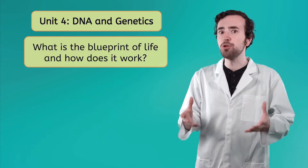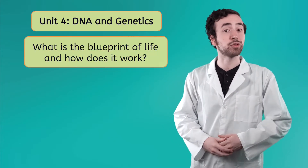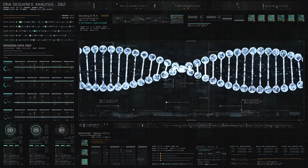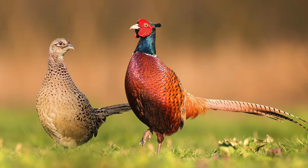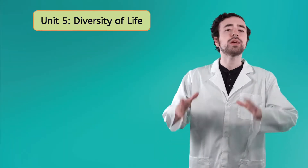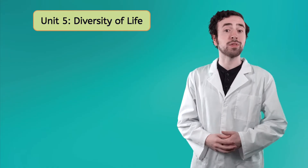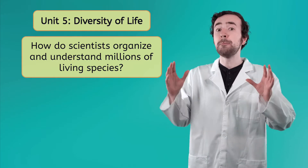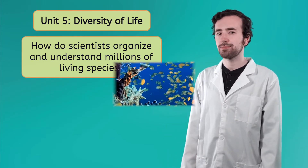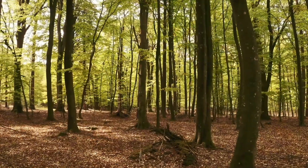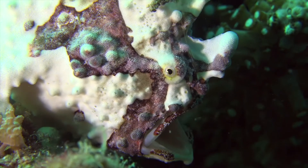From there, we'll move on to Unit 4, where we'll take a look at the blueprints for life as we study DNA and genetics. If you've ever wondered why you or your family members look the way you do, or even why two members of the same species of animal can look completely different, you'll find the answer in this unit. In Unit 5, we'll explore the incredible diversity of life on Earth, answering the question: how do scientists organize and understand millions of different living species? We'll take a closer look at the unique characteristics of all different forms of life, from trees, to wolves, to living things you've probably never even heard of.